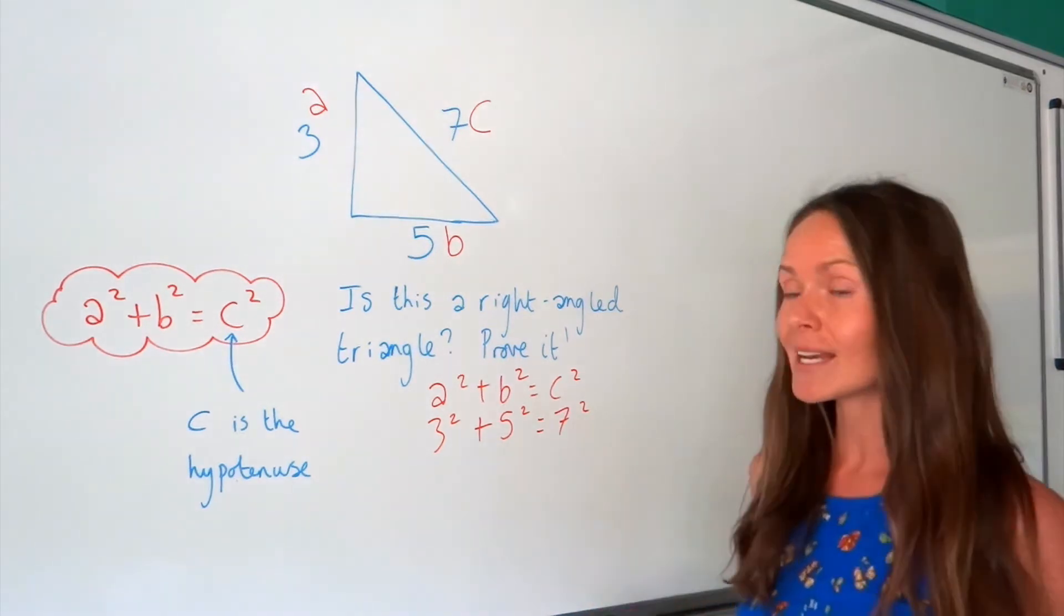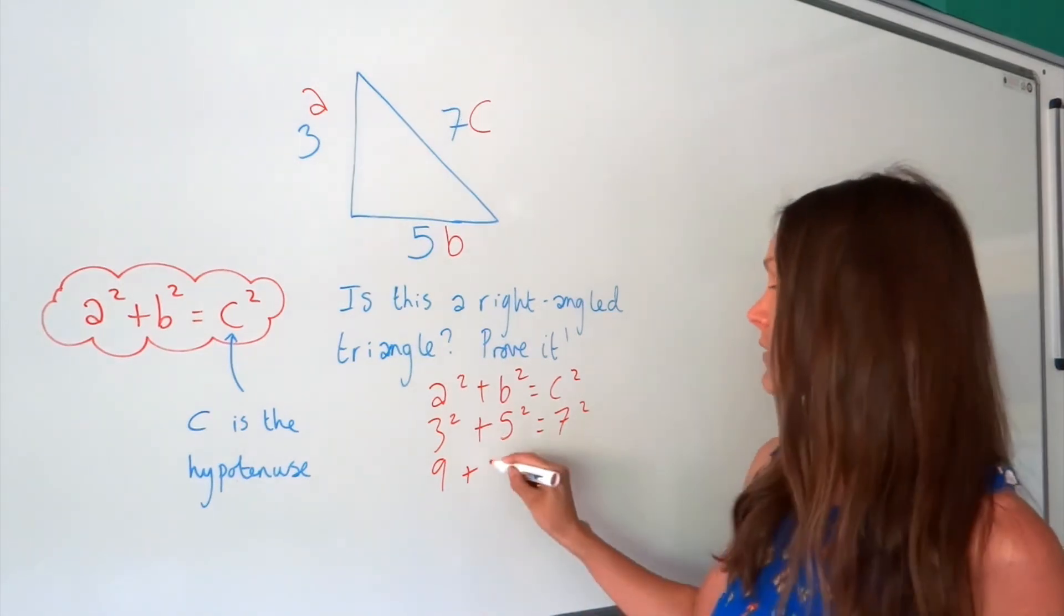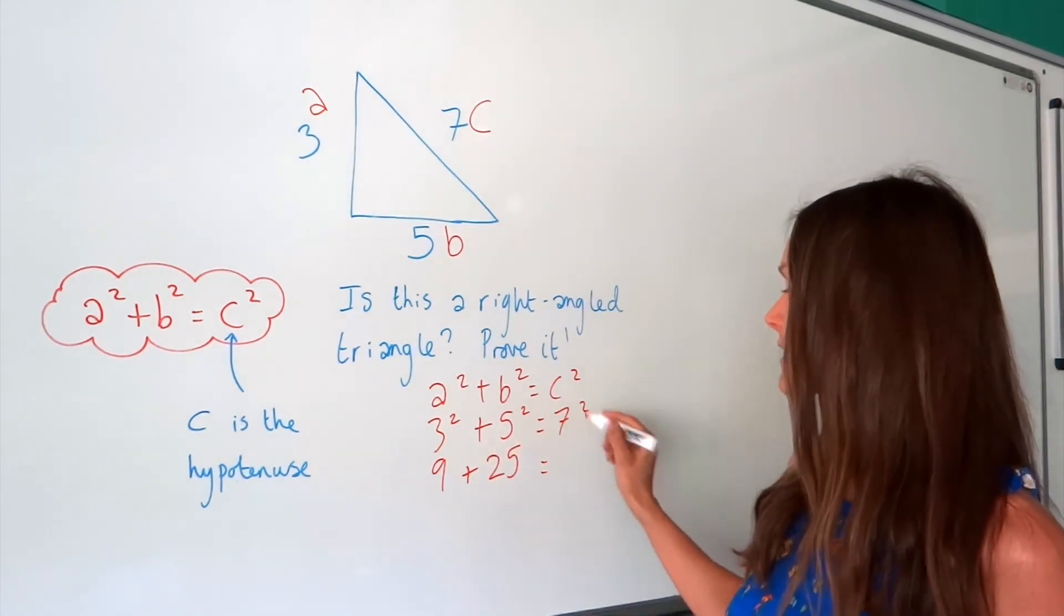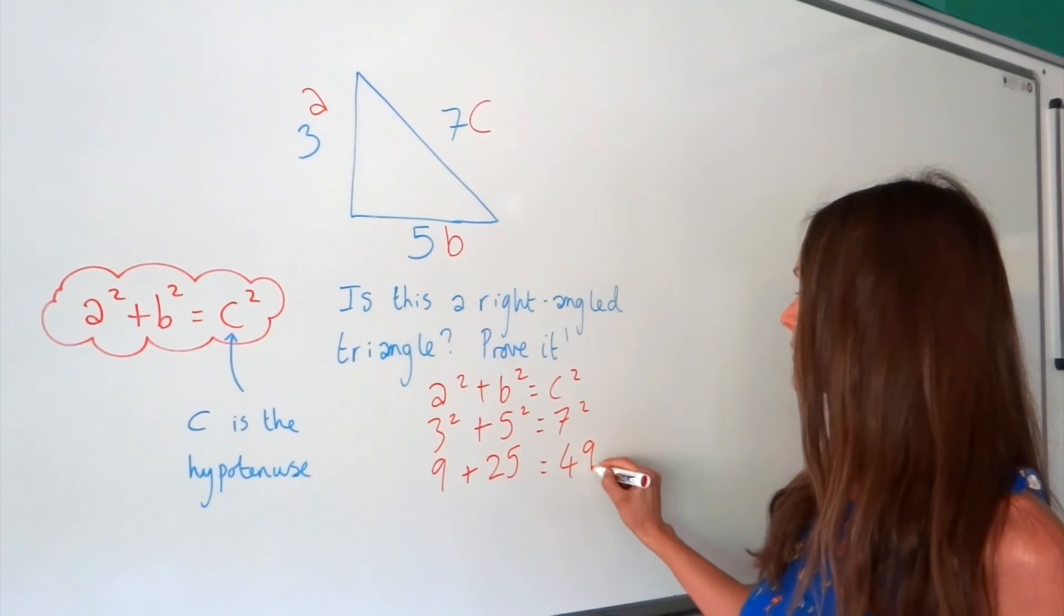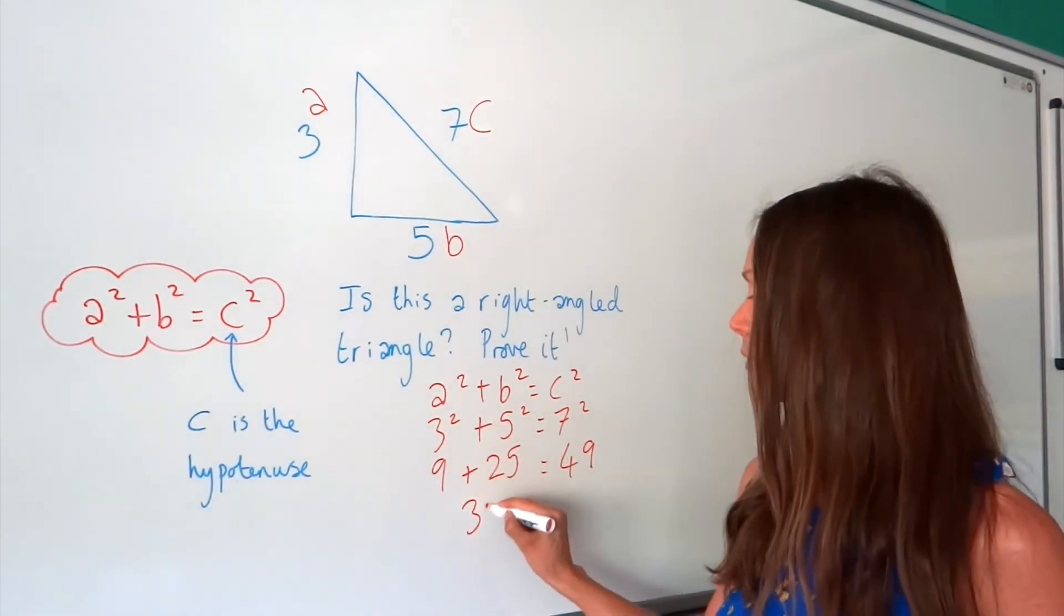So let's calculate this. 3 squared, 3 times 3 is 9. 5 squared, 5 times 5 is 25. And 7 squared, 7 times 7 is 49. Well, if I add 9 and 25 together, I get 34.